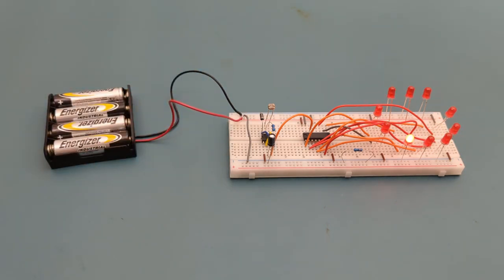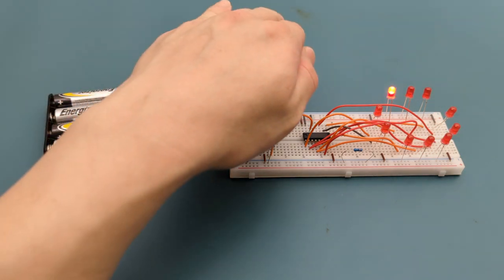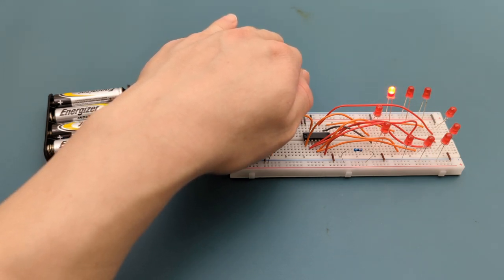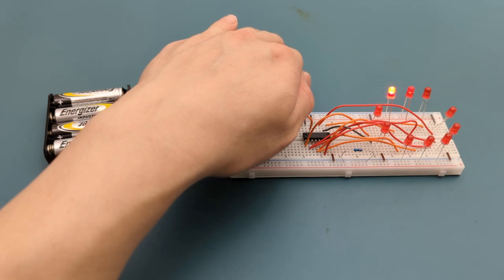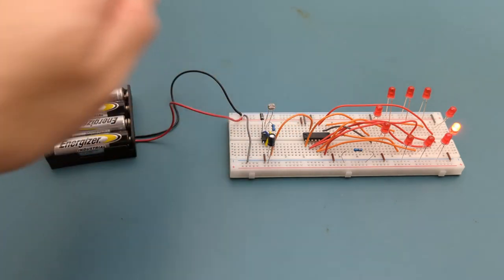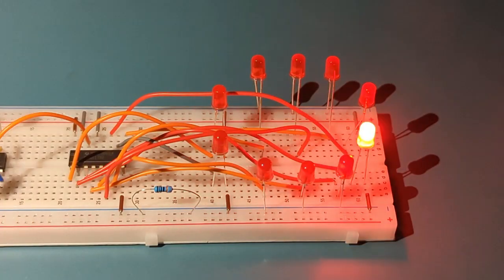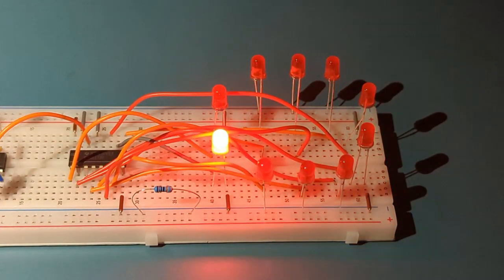The LEDs cycle on and off quickly in a circular sequence. When I put my hand over the LDR, the LEDs slowly turn on and off one after the other. But when I remove my hand, they start flashing quickly again. When I lower the lights, the LEDs gently turn on and off one after another.